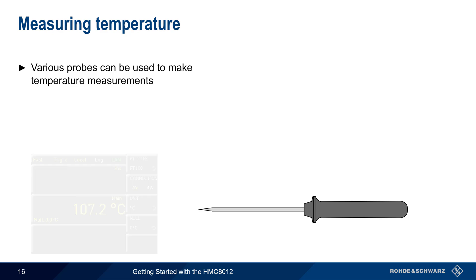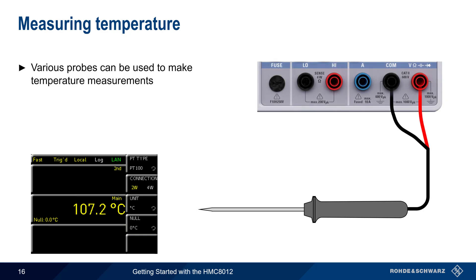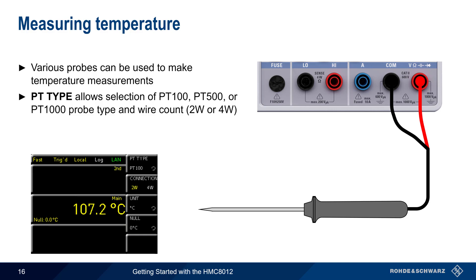The HMC can measure temperature by using various types of probes. The resistance of these probes changes with temperature, so they are connected in the same way as for resistance measurements, namely to the V and COM jacks. The menu item PT type allows selection of the probe type – PT100, PT500, or PT1000 – as well as the number of wires, 2 or 4. Note that larger PT numbers indicate higher temperature measuring capability. The units of temperature can also be set to Celsius, Kelvin, or Fahrenheit.